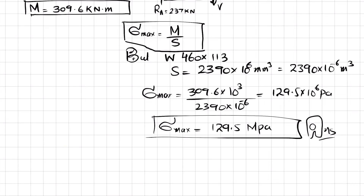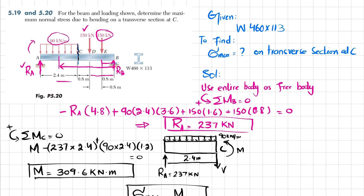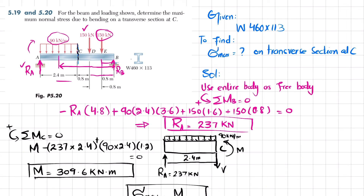To explain what this means at the transverse section: the stress is maximum at the top and bottom flanges of the cross-section, decreasing to zero at the neutral axis. This 129.5 MPa is your maximum normal stress at the transverse section C.